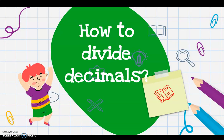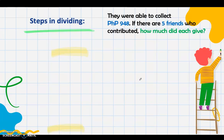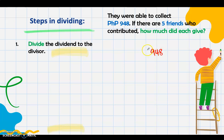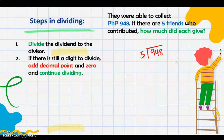How do we divide? In dividing, you divide the dividend by the divisor. So 948 is the dividend and 5 is the divisor. If there is still a digit to divide, add a decimal point and 0, and continue dividing.